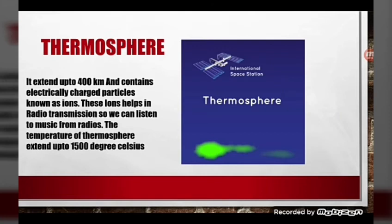Now we talk about the thermosphere. It extends up to a height of 400 kilometers and contains electrically charged particles known as ions. These ions help in radio transmission, so we can listen to music from radios. The temperature of the thermosphere can reach up to 1,500 degrees Celsius. So because of the ions, we can listen to radio and enjoy music.